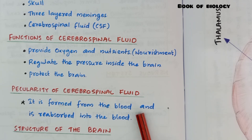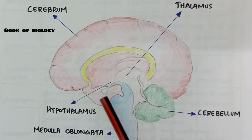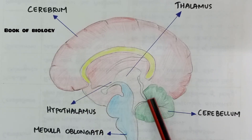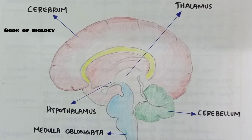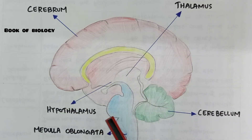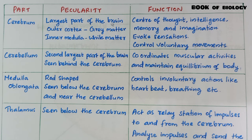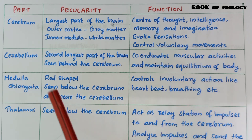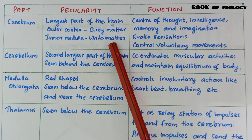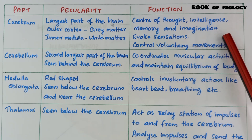Now we can study the structure of the brain, one of the most repeated questions in your exams. The largest part is the cerebrum, and behind it is the cerebellum. You can see the medulla oblongata, and below the thalamus is the hypothalamus. Cerebrum — largest part of the brain; outer cortex is gray matter, inner medulla is white matter. Functions: center of thought, intelligence, memory and imagination; evoke sensation; control voluntary movements.